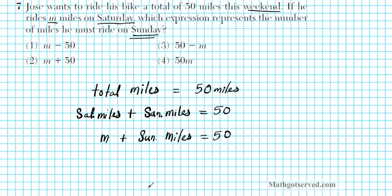We'll simply subtract n from both sides of our equation, and then we'll have Sunday miles equals 50 minus n. So 50 minus n is our answer, option number 3.